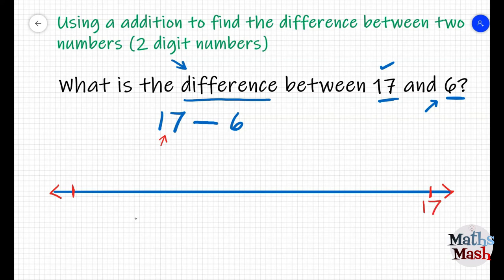Remember, numbers on a number line go from left to right and numbers get bigger as we move from left to right. Now, we place the six under the dot on the left. Now, we just count up from six until we get to seventeen.